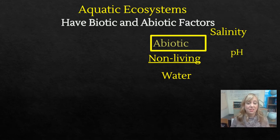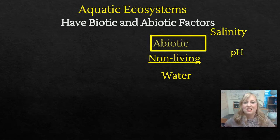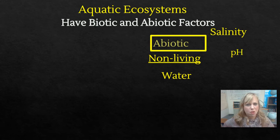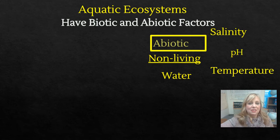pH. A pH of 7 is considered neutral. A lot of water systems are falling into a pH of 6, which means acidified or acidic. Where is it getting that from? Pollution, industry, sulfur dioxide that's in the air.